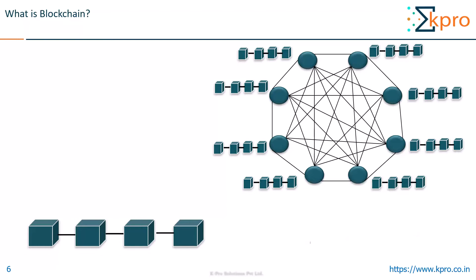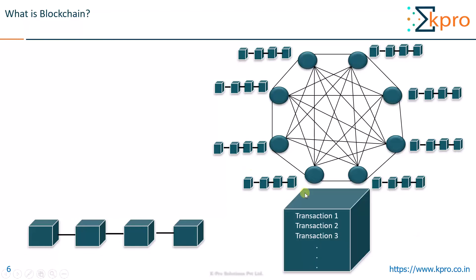Now let us see what a block consists of. A block is nothing but a record book which records the transactions that happened in the blockchain network chronologically. The term chronologically is very important because you cannot alter the sequence in which the transactions have been entered in this block. This being the first ever block, it will hold the transactions that happened at the beginning of the network, and all these transactions will be recorded in a chronological order. For simplicity, you can visualize a transaction as any monetary transaction, but in reality transactions do not only involve money but also any other asset.